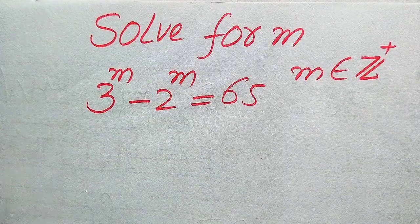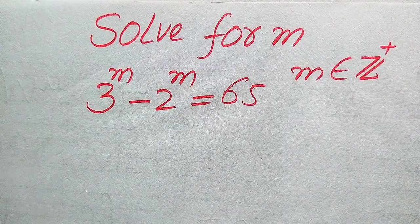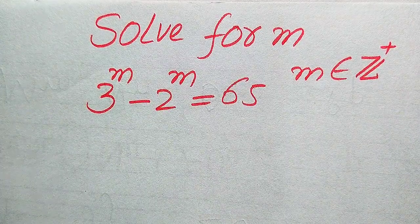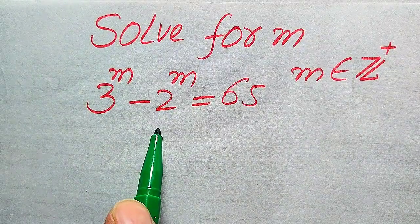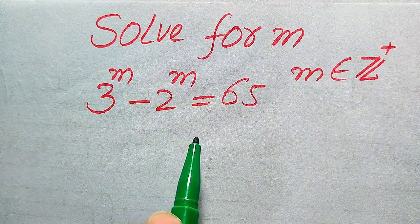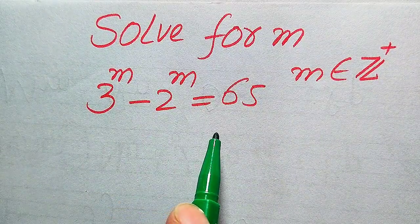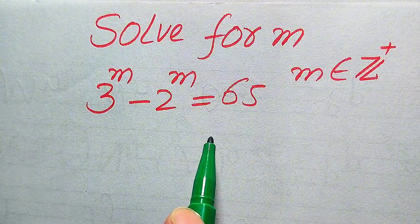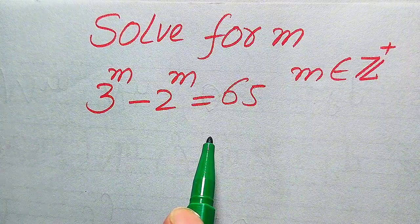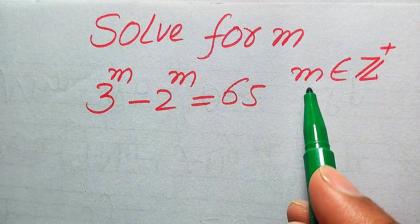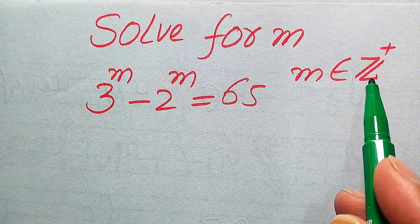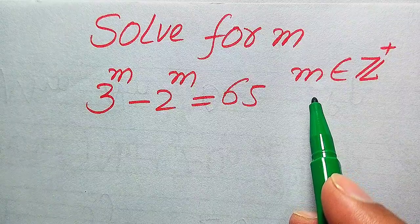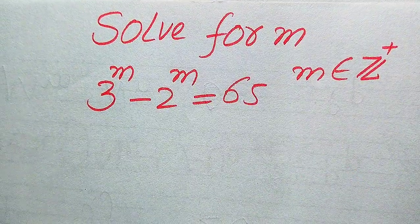Hello everyone. How to solve this problem for the values of m if we have 3 to the power of m minus 2 to the power of m equals 65. We solve this problem for positive integer values of m, so now we move toward the solution.